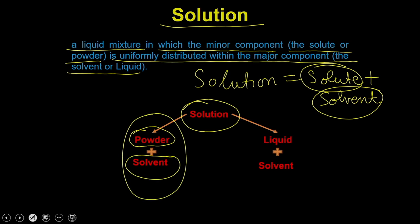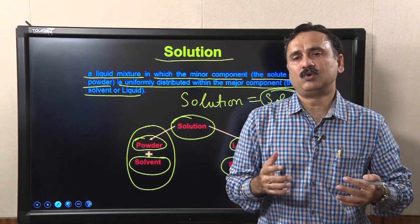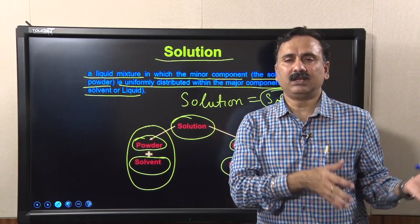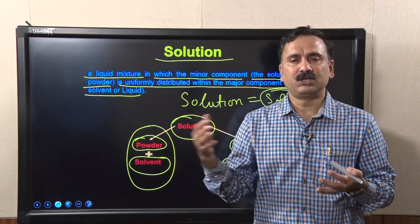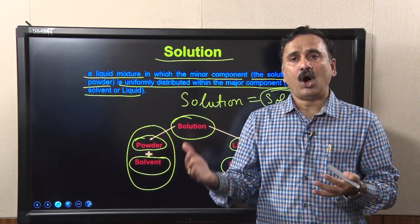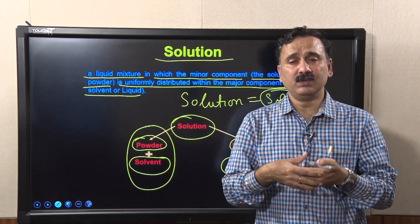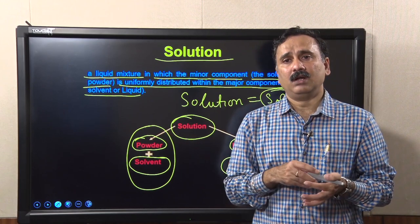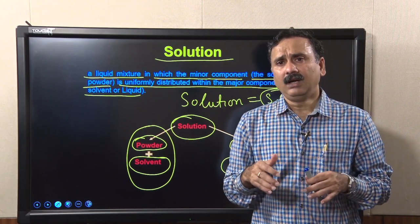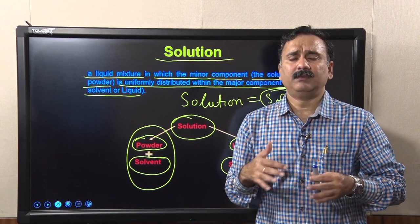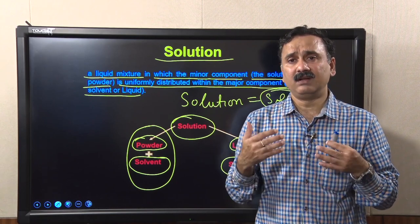In another way, you can also have liquid reagents like glycerol and add that to a solvent. So there are two ways to prepare solutions: either take a powder and mix it with a solvent, or mix two different liquids together — both give you a solution.